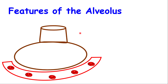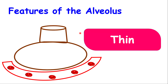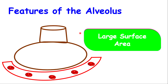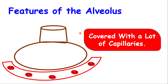Now, the features of the alveolus that ensure it works effectively in carrying out gaseous exchange: the walls are thin; the alveolus is moist due to mucus; it has a large surface area; and it is covered with a large number of capillaries.